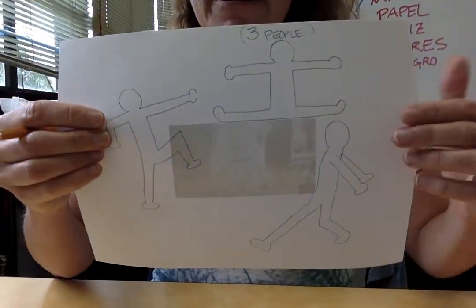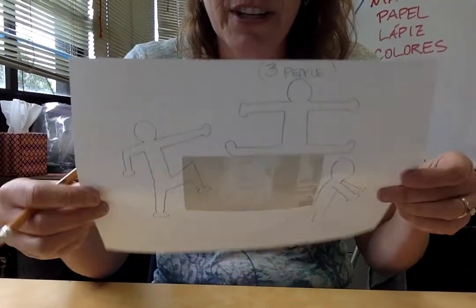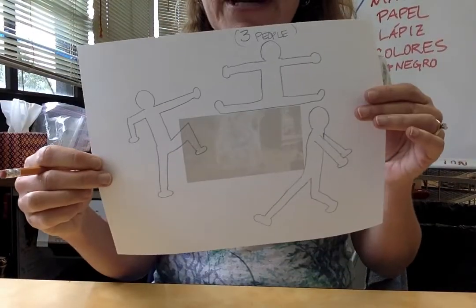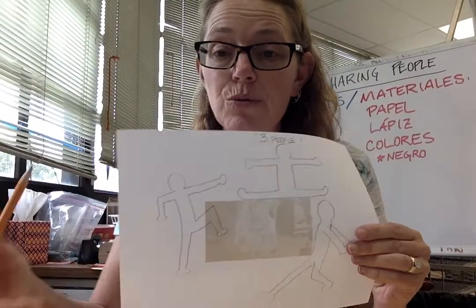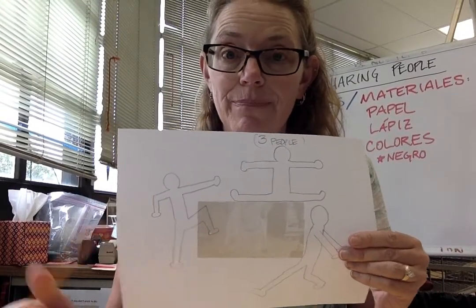You can see I'm recycling paper. Okay, so now I have my three people. The next step is to color them—color each one a different color. I'm gonna go ahead and color these.